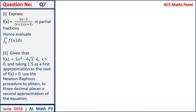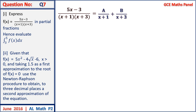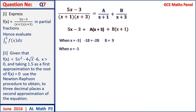Question 7: the denominator is a quadratic with linear factors, so the partial fractions form is A on x plus 1 plus B on x plus 3. Multiplying both sides by the denominator gives 5x minus 3 equals A times x plus 3 plus B times x plus 1. When x equals minus 3, B equals 9. When x equals minus 1, A equals minus 4. Therefore f of x equals minus 4 on x plus 1 plus 9 on x plus 3.